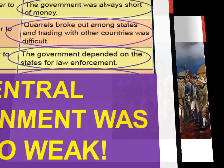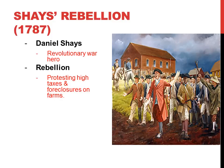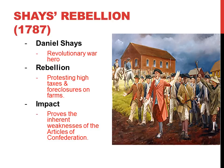The event that would spell the demise of the Articles of Confederation was Shays' Rebellion in 1787. Daniel Shays, a former Revolutionary War hero, led a revolt of farmers in the New England colonies who were protesting the high taxes and foreclosures being placed on their farms. In the end, the federal government was not able to put down the rebellion quickly, and much blood was shed, proving that the weaknesses in the Articles of Confederation were too much to overcome.